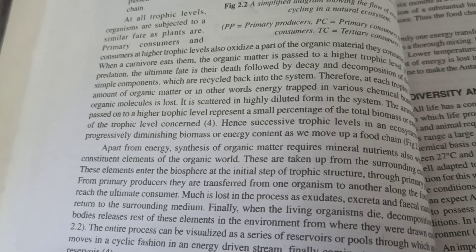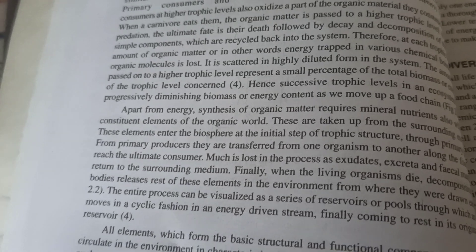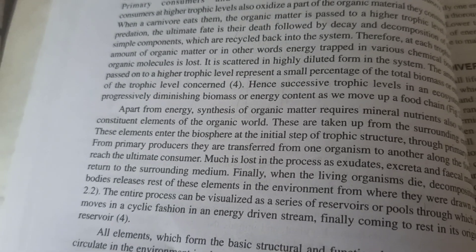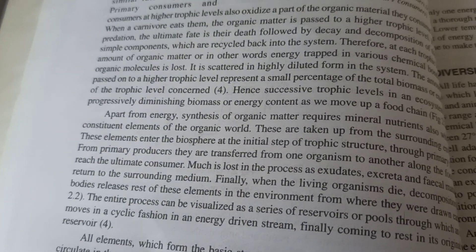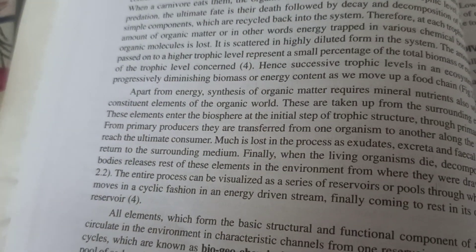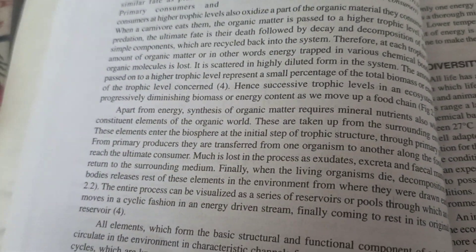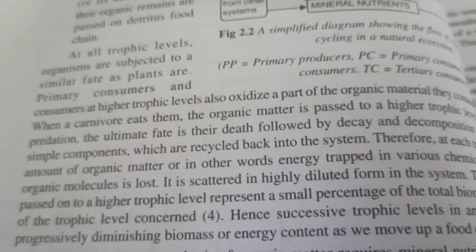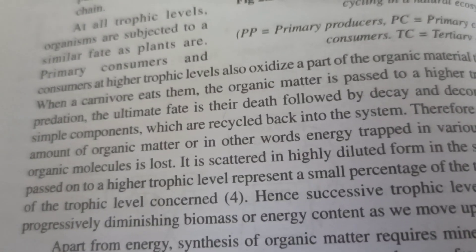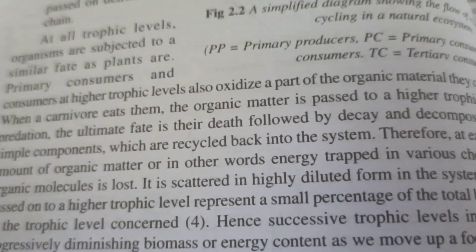Solar energy transfers to the producers and then to the consumers, flowing in the same direction. Energy cannot flow equally; only a very minimum level of energy from the first trophic level can transfer to the next trophic level.